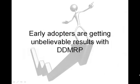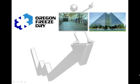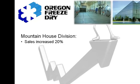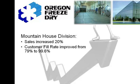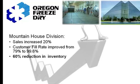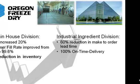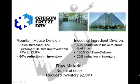Early adopters are getting results. Consider the case of Oregon Freeze-Dry, the largest diversified freeze-dryer in the world. Prior to implementing DDMRP tactics, Oregon Freeze-Dry used traditional MRP tactics with standard minimum batches. In their Mountain House division, sales increased 20% because fill rates went from 79% to 99.6% — accomplished with 60% less inventory. In their industrial ingredients division, there was a 60% reduction in make-to-order lead time, no stock-outs, and a 20% reduction in inventory. With regard to raw materials, they had no out-of-stocks and a reduction of over $2.5 million in inventory.